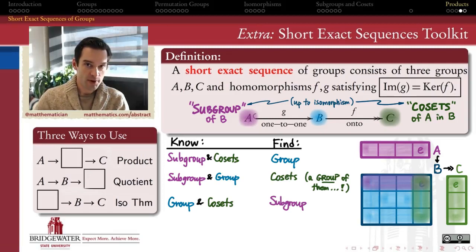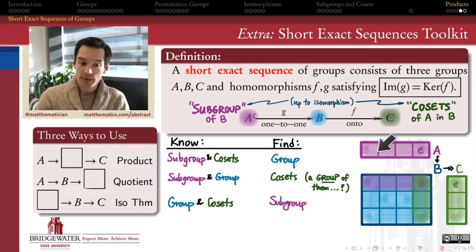So, a short exact sequence of three groups A, B, and C is a way of realizing A as being isomorphic to a subgroup of B in a way which then allows me to understand C as the group of cosets of that subgroup inside of B.